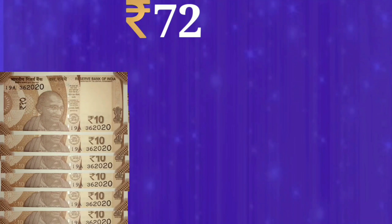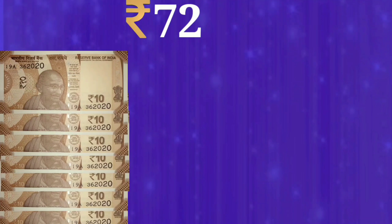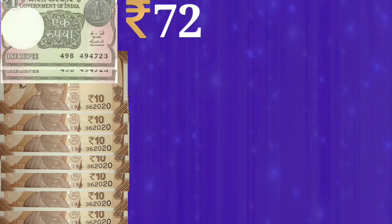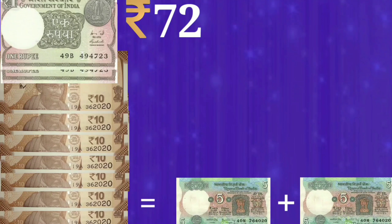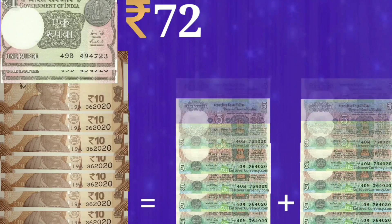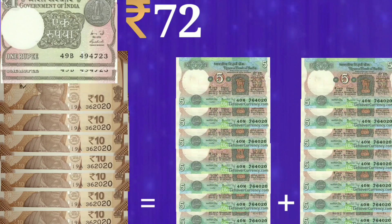Dear students, they have seven notes of 10 rupees, that means 70 rupees, and two notes of 1 rupee, that means 2 rupees. But my dear students, these seven notes of 10 rupees can't be equally distributed among 12 children. So what we can do is, in place of one 10-rupee note, we can take two 5-rupee notes, and we'll do the same for all the 10-rupee notes. And likewise, how many 5-rupee notes do we get? Yes, they are 14 in number.